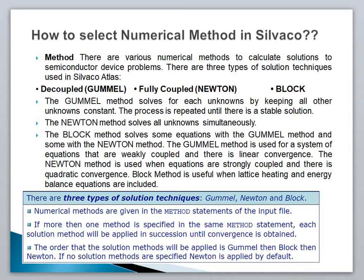The Gumel method is used for a system of equations that are weakly coupled, and there is linear convergence. We mostly use the Gumel method when using the BQP model or in nanowire FET devices. The Newton method is used when equations are strongly coupled, providing quadratic convergence. When using the Poisson equation to solve a problem, we use the Newton method to solve the quadratic equation.